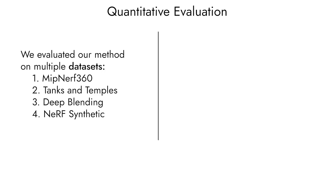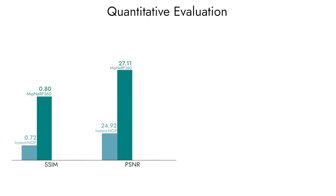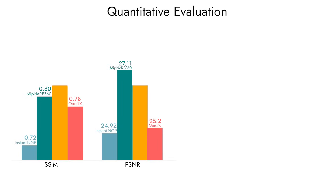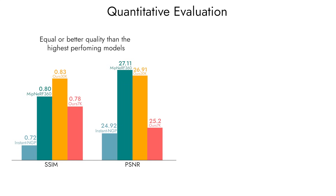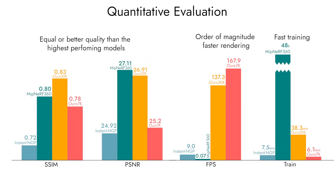We ran an extensive evaluation using multiple datasets: BipNerd360, Tanks and Temples, Deep Blending, and Nerf Synthetic. We also compared our algorithm against recent methods like BipNerd360, Instant NGP, and Planoxils. In our quantitative evaluation, 3D Gaussians achieve overall equal and sometimes better quality than the best models that are slow to train and render, while maintaining fast training and an order of magnitude faster rendering.